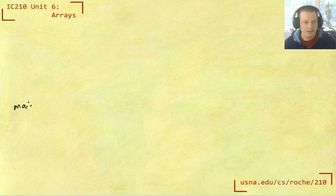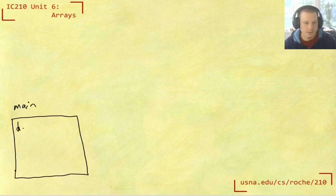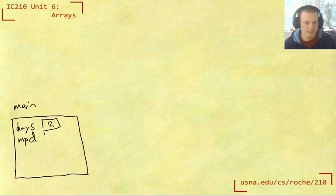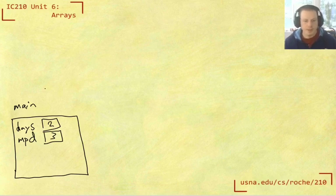So just remember that there are two variables that we're reading in so far: days and meals per day. So let's draw this in terms of a stack-heap diagram. And in main, this is on the stack, we have days, which in that example was two, and meals per day, which I'm just writing MPD, which was three.